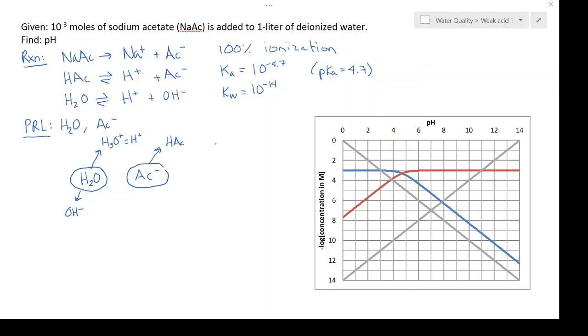So at the top I have my proton gainers and at the bottom I have my proton losers, and I set them equal to each other or their concentrations. So I have hydrogen ion concentration plus the acetic acid which is equal to hydroxide, and that is our proton condition.